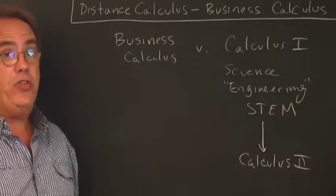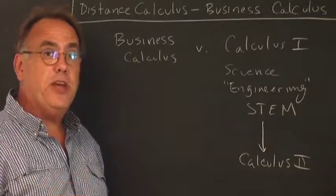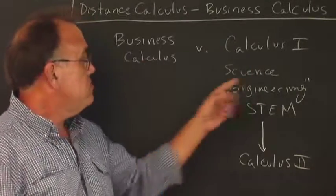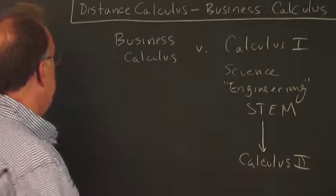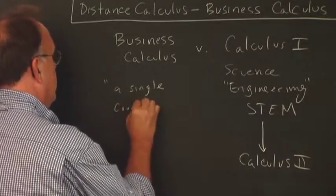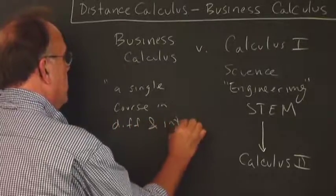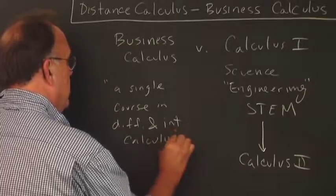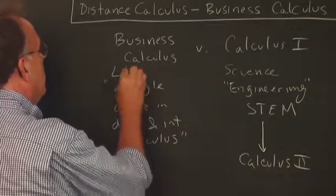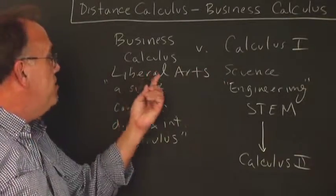This is not the path for you. So, the first thing you need to do as a prospective student is to figure out which Calculus sequence you need to be in. And this course is usually described as a single course in Differential and Integral Calculus. That's usually how it's described. It's also called Liberal Arts Calculus. It's also called Calculus for Non-Majors.